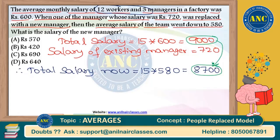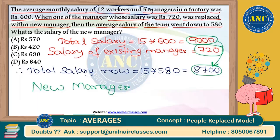When the old manager was there, total sum was Rs. 9,000. When the new manager came, total sum is Rs. 8,700. That means the new manager is getting Rs. 300 less than the old manager. Old manager was getting Rs. 720, so the new manager's salary = Rs. 720 − Rs. 300 = Rs. 420. That is the answer by Method 1.